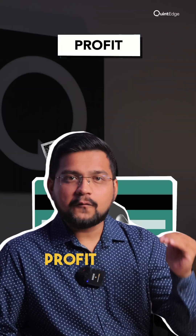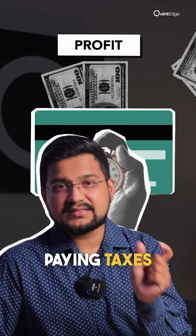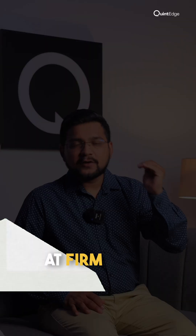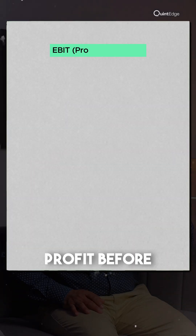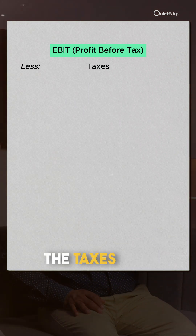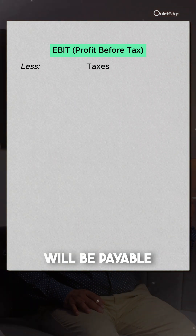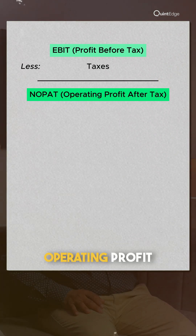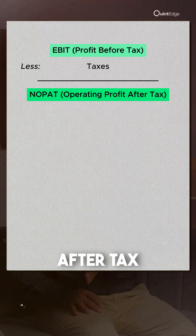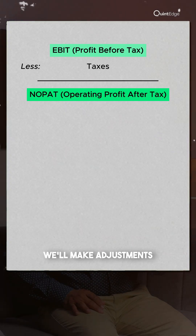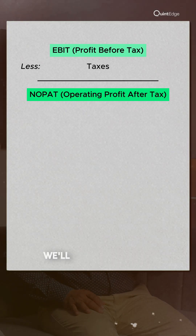We will calculate the profit of the firm before paying taxes. The keyword here is 'firm' — at the firm level, profit before tax is EBIT. From this we subtract the taxes payable by the firm, and we arrive at the operating profit of the firm after tax, which is known as NOPAT.